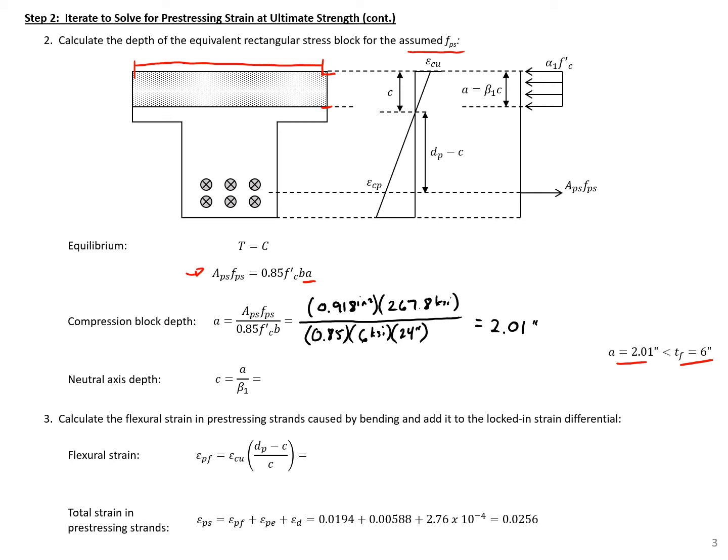Next we can find our neutral axis depth. So we just take our 2.01 divided by our beta 1.75 for 6 KSI concrete. And we'll get a c here of 2.68 inches.